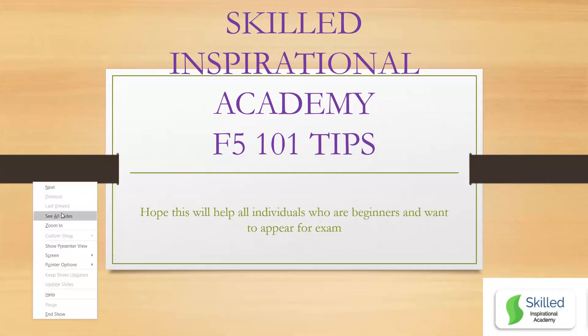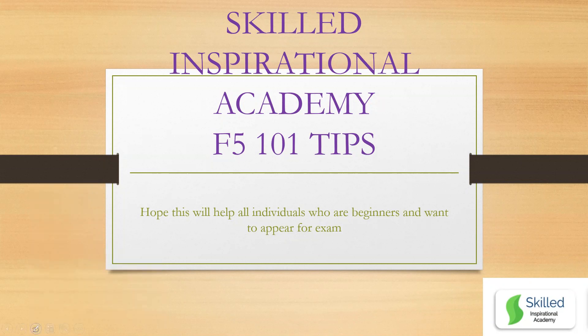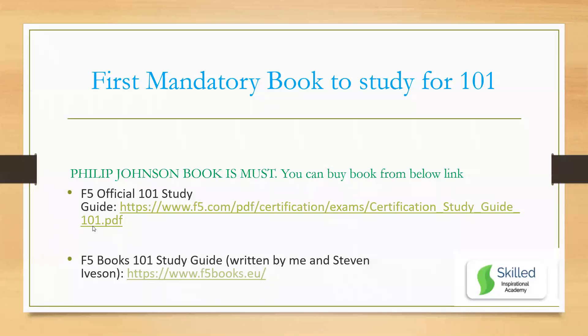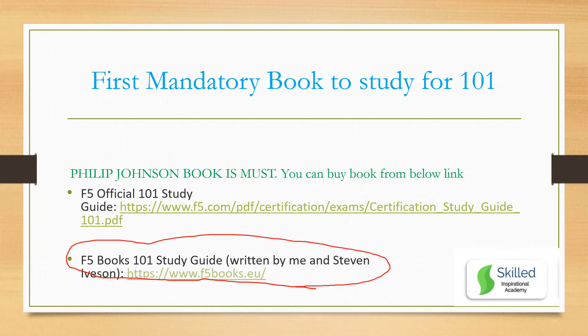First of all, I want to tell you how these tips will help you and what materials you can refer to start your journey. The first mandatory book to study for the 101 exam is by Philip Johnson. There are two things: one is the F5 official study guide, which I'll share further on. But for the F5 101 exam book, this is mandatory — it will give you a great idea of all topics in 101. It's around 333 pages and you need to read it and clear the concepts.